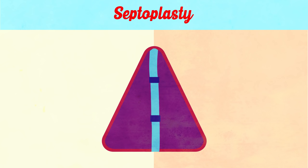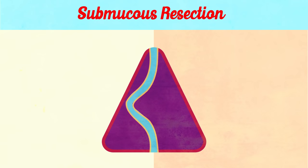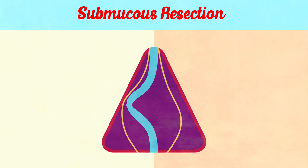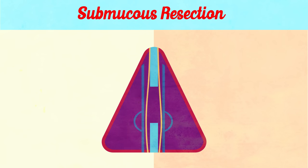A more radical form of this operation is submucous resection, in which mucoperichondrial and mucoperiosteal flaps overlying one side of the septum are lifted, most of the septum is removed, and the flaps are repositioned.